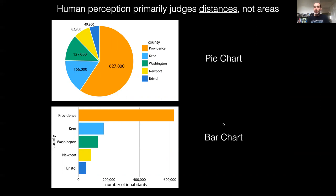So, if no one told you this before: generally avoid pie charts — they're not the best way of visualizing data. Even if you need to visualize proportional data, there are better options out there.